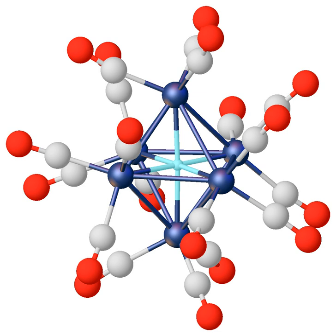Interstitial hydrides most commonly exist within metals or alloys. They are traditionally termed compounds, even though they do not strictly conform to the definition of a compound, more closely resembling common alloys such as steel. In such hydrides, hydrogen can exist as either atomic or diatomic entities.